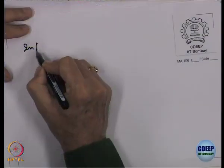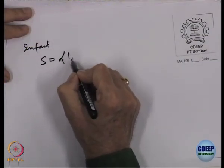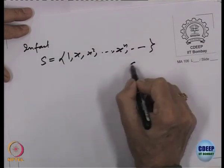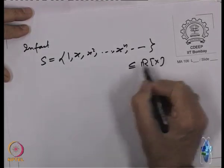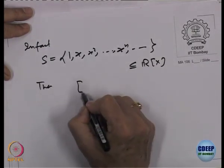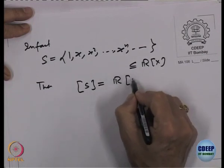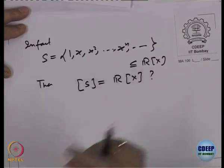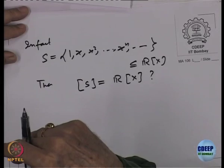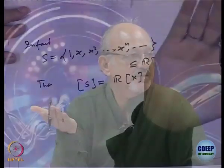In fact, we can write S = {1, x, x², x³, ..., xⁿ, ...} — this infinite set is a subset of R[x]. The span of S equals R[x]; this infinite set generates R[x]. If you stop at any finite point, the higher degree polynomials will not be generated.